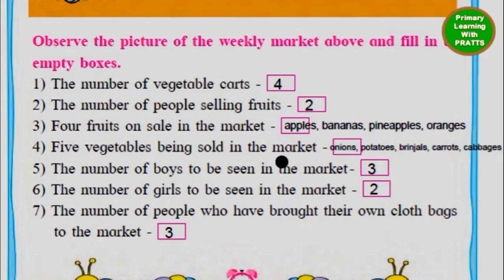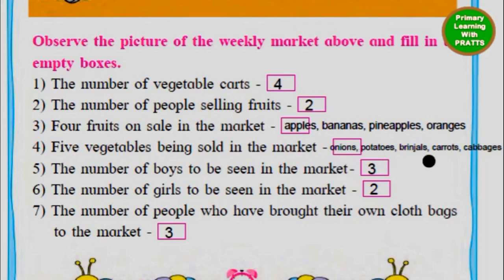We can see one fruit cart fellow has apples and bananas, so we write apples and bananas. We can also see one lady sitting with pineapples and oranges, so we write apples, bananas, pineapples, oranges. Next: five vegetables being sold in the market — we have onions, potatoes, carrots, and cabbages.